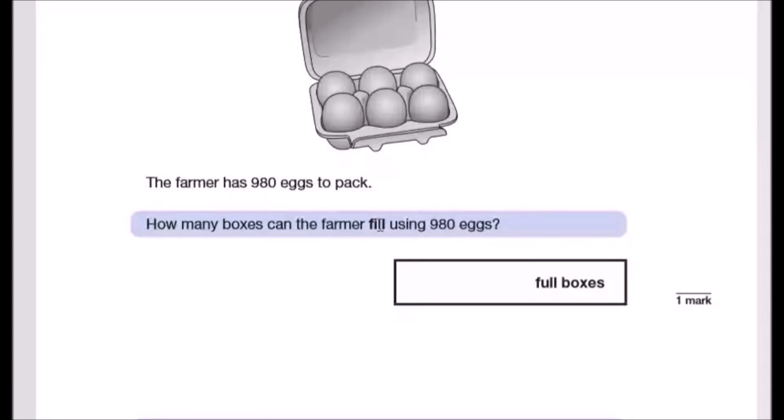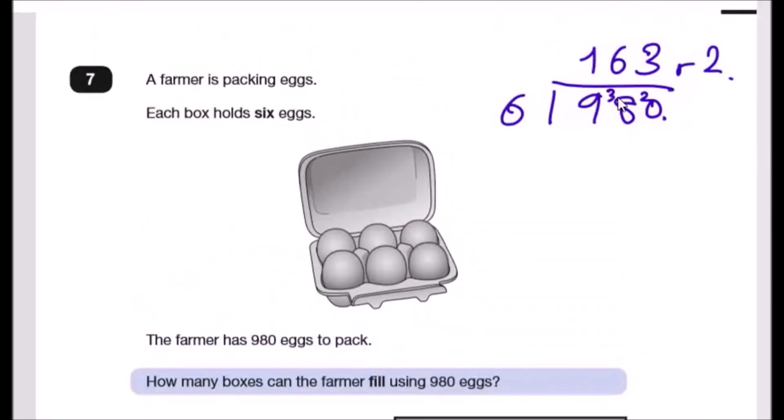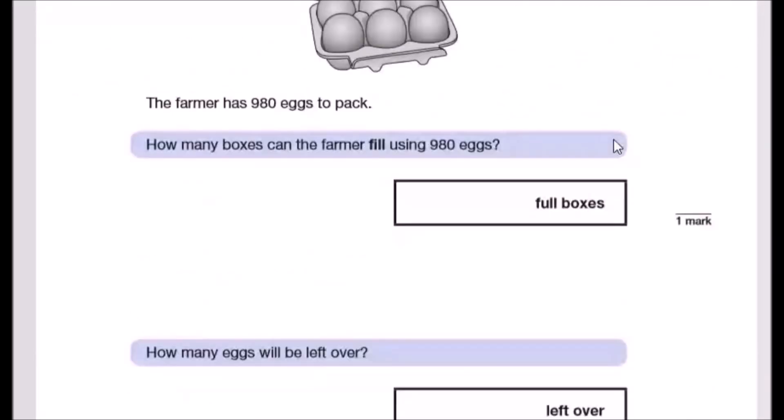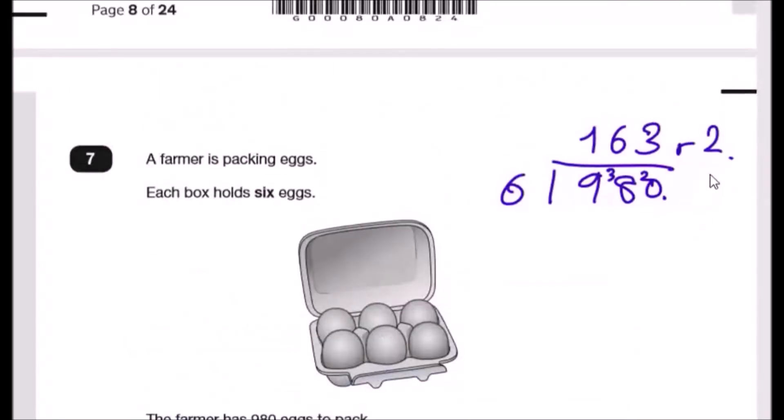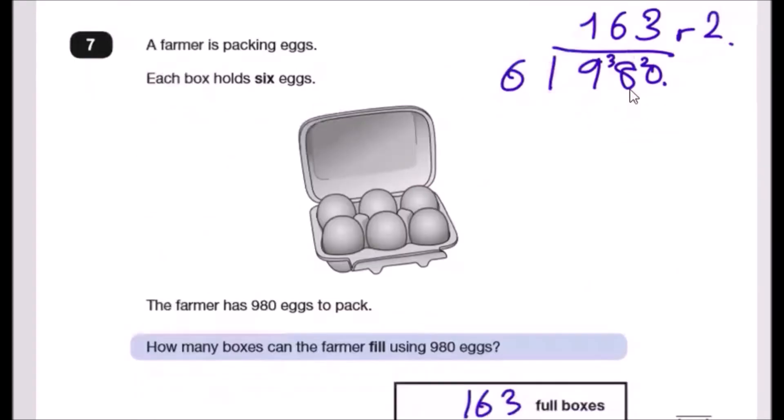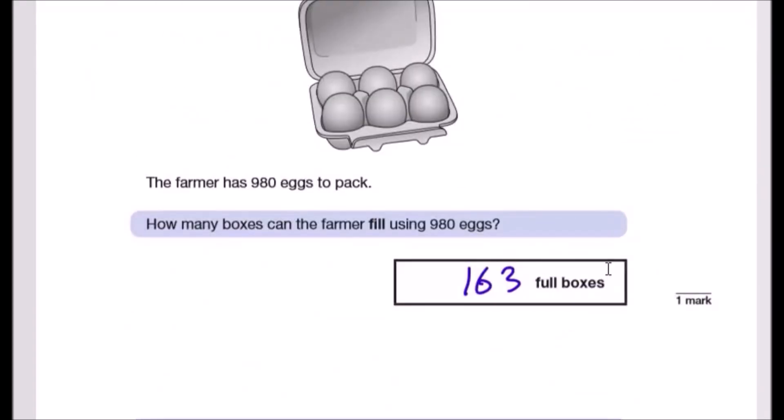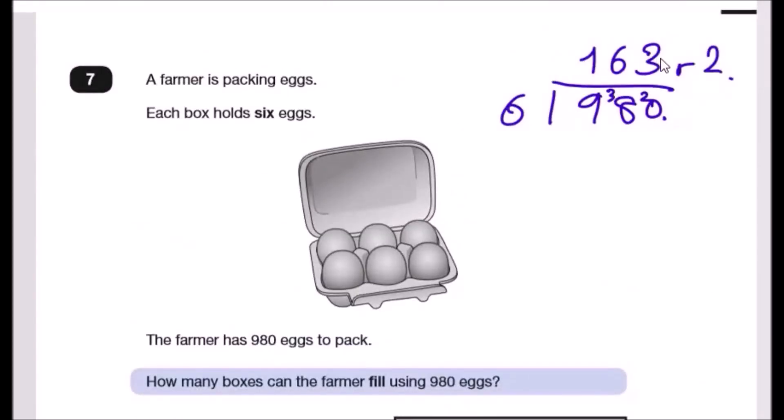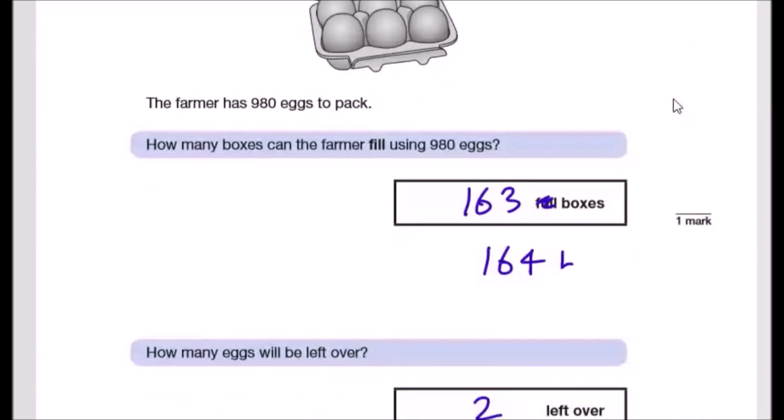Well, out of the full boxes he can fit 163 boxes full of six eggs, but then how many eggs will be left over? We have a remainder of two. Now this question could be asked both ways. They could tell you how many boxes do you need and not necessarily full boxes. If the question were just regular boxes, you'd realize that you need 163 boxes plus an extra box to put the two eggs. So it would have been 164 boxes. That's only if there was no full boxes required.